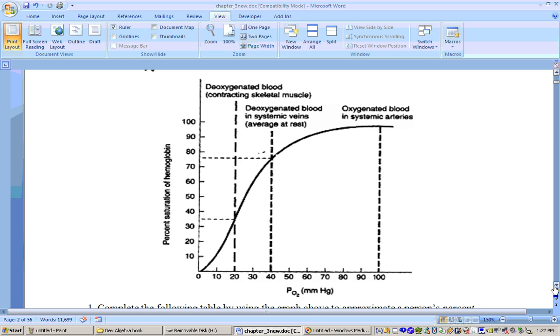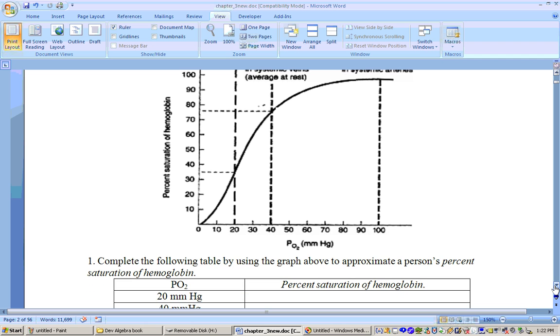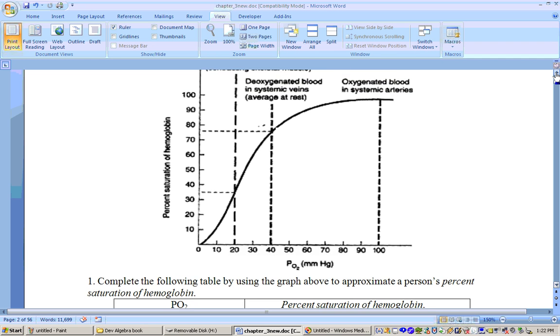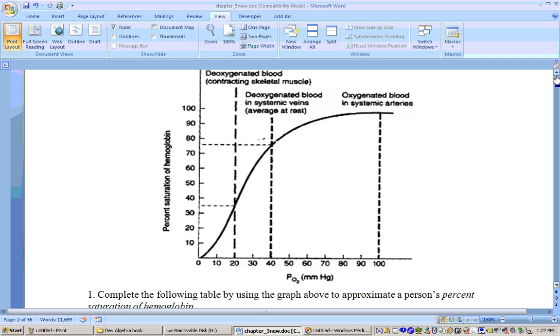Down below it gives you some questions to ask, and these should be in your book. Let's go ahead and go over these. Complete the table and it's asking us our percent saturation of hemoglobin if your partial pressure of oxygen, your PO2 level, is at 20. Well, all we do is we go out here to 20 and then we go straight up. This little dotted line I'm showing you goes straight up.